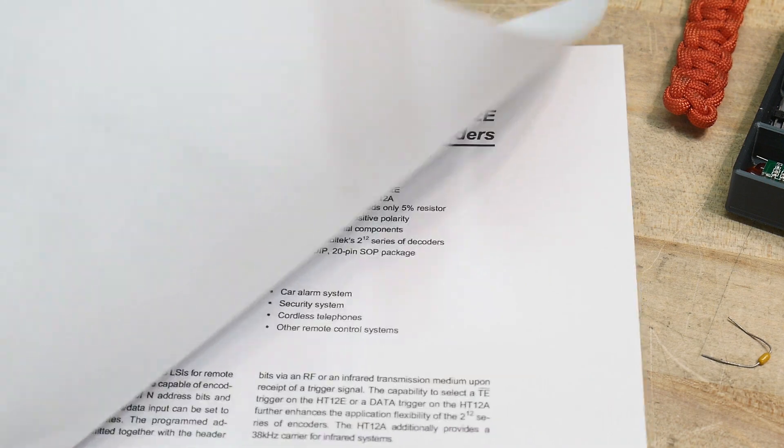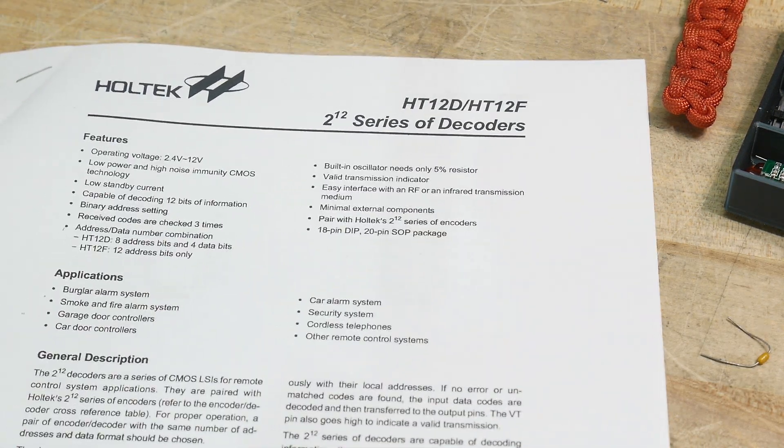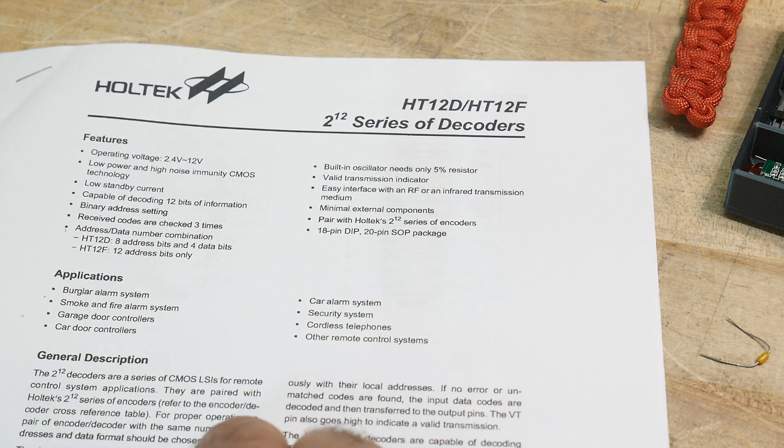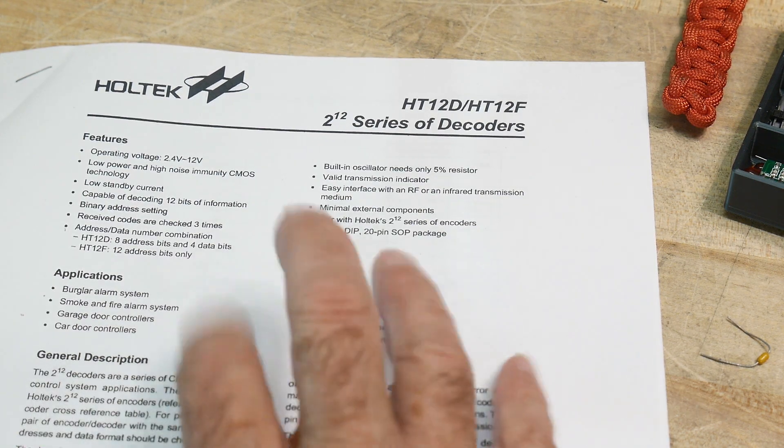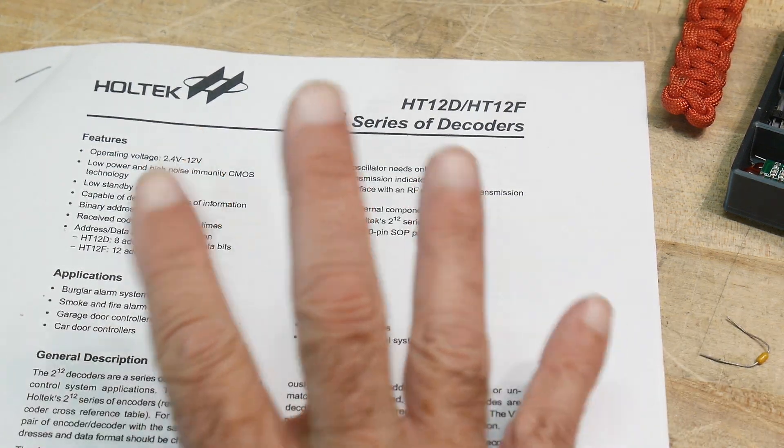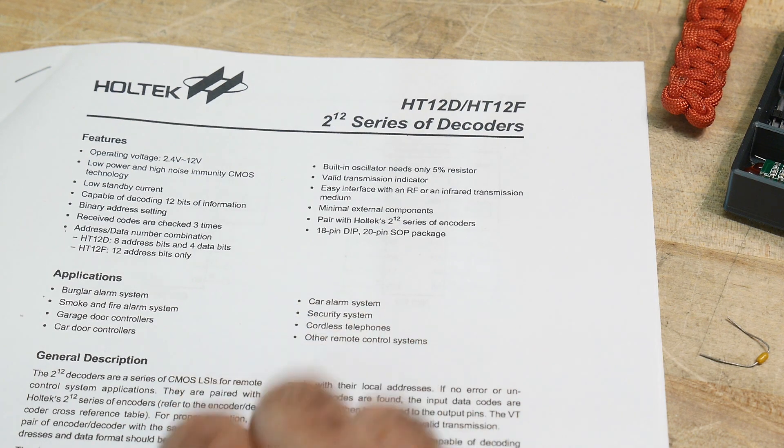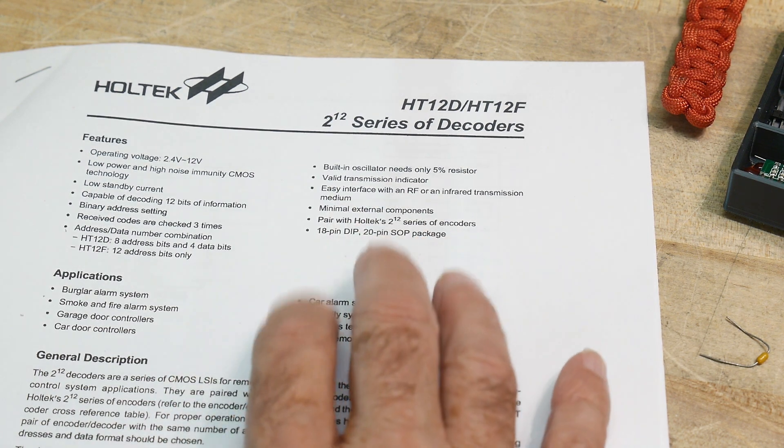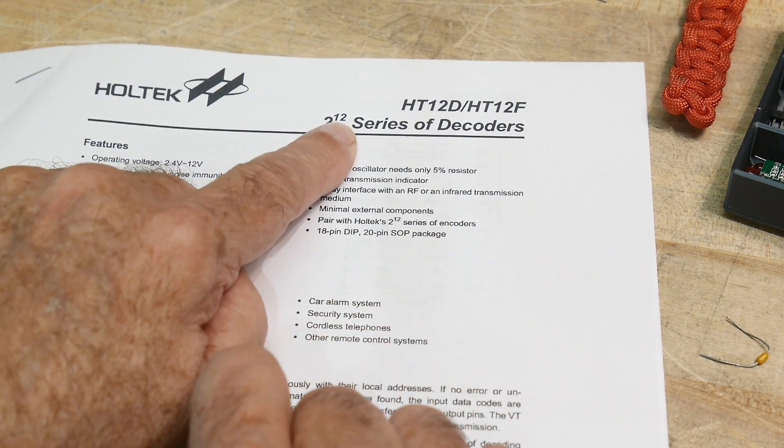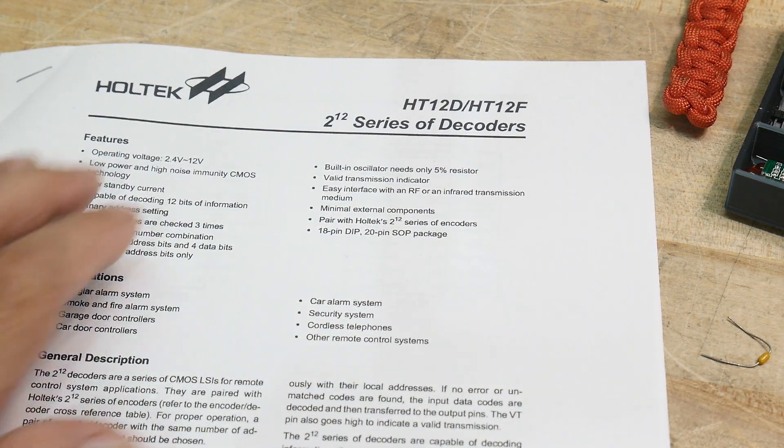So what is an encoder and decoder? What do these two chips do? Well, you'll find these chips in remote controls like old garage door openers and stuff. They were quite popular. These days, it's probably microcontrollers doing everything. But back in the day, yeah, two to the 12 series of decoders.